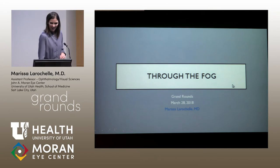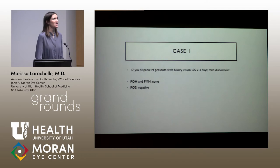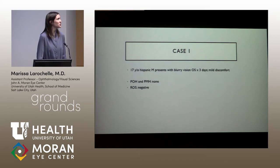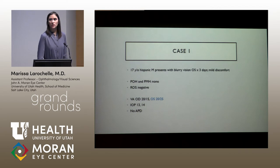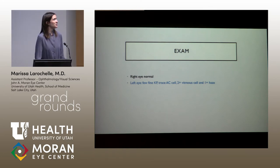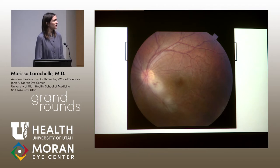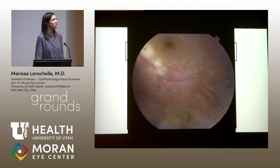I'll present three cases with a brief overview of ocular toxoplasmosis. The first case is a 17-year-old Hispanic man with blurry vision in one eye and mild discomfort, with a non-contributory past medical and ocular history. Vision in the affected eye was 20/25 with normal pupils and pressures. The affected eye had mild anterior chamber reaction with 2+ vitreous cell and haze. Fundus photo shows retinal whitening along the inferior arcade associated with hemorrhage, and a more pigmented or atrophic area — a pigmented scar.